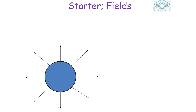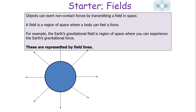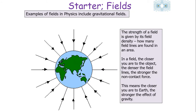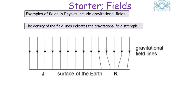Objects can exert non-contact forces by transmitting a field in space. A field is a region of space where a body can feel a force — the Earth's gravitational field is the region of space where you can experience the Earth's gravitational force. We represent fields with field lines, and the strength of a field is given by its field density — how many field lines are found in an area. The closer you are to an object, the denser the field lines and the stronger the non-contact force.